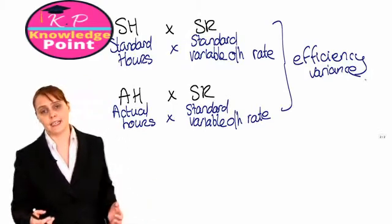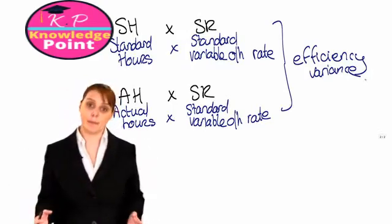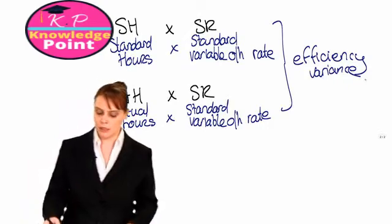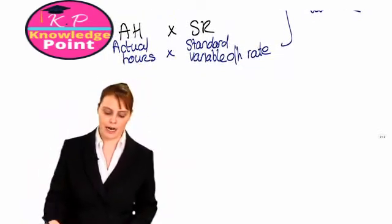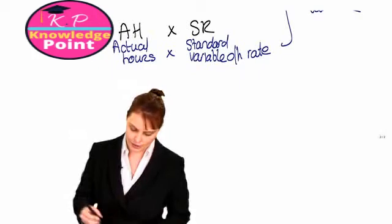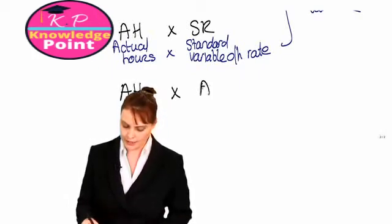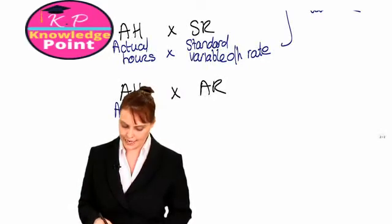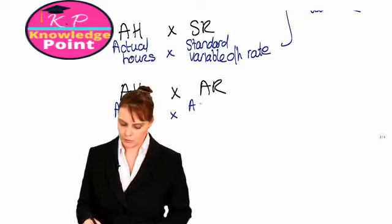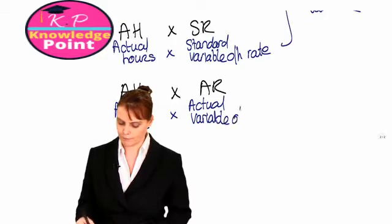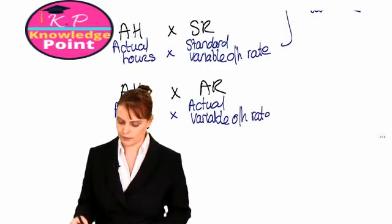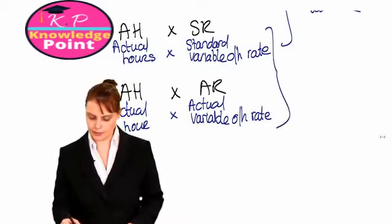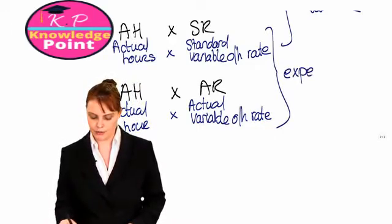Our second variance is our variable overhead expenditure variance. We calculate that by comparing our actual hours at the standard rate to our actual hours at the actual rate, where our actual rate is our actual variable overhead rate. Comparing these two things gives us our expenditure variance.